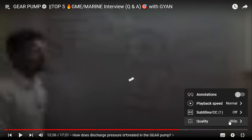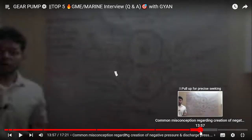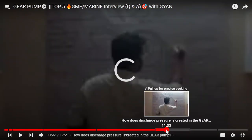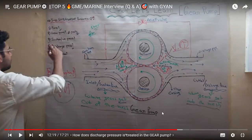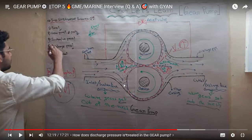A student asked a cross question: what if there is more clearance between the casing and the gear? The efficiency of the pump will decrease. But if there is no clearance, the fluid will experience a lot of friction, will heat up, and because of boiling of fluid it can cause cavitation as well.